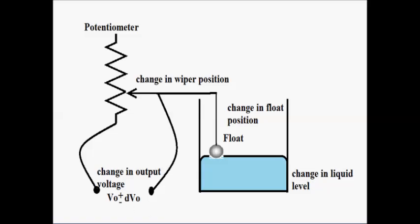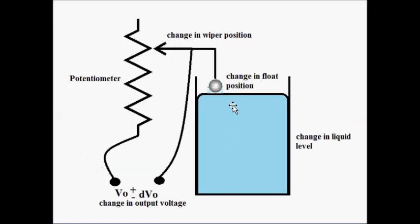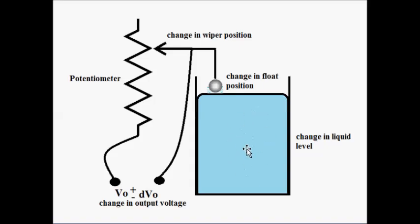When the liquid level increases from a certain point, the float moves upward. As a result, the wiper also moves upward, which changes the output resistance, and there will be a proportional change in the output voltage. This is the simple way by which a change in the level of liquid in a tank or container is converted into a suitable voltage output signal.